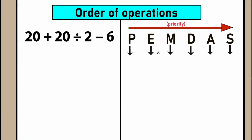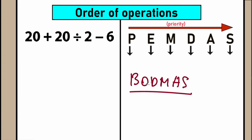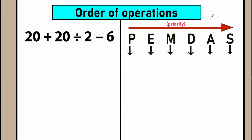Here is our order of operations: PEMDAS. A lot of students may have heard of BODMAS — this is also an order of operations. The order for brackets, orders, division, multiplication, addition, and subtraction is absolutely the same in both cases. It just depends on what country you live in. BODMAS is mainly used in India and the UK, while PEMDAS is mainly used in the USA, Canada, and Europe. In 99% of cases, the order of operations is the same for both.